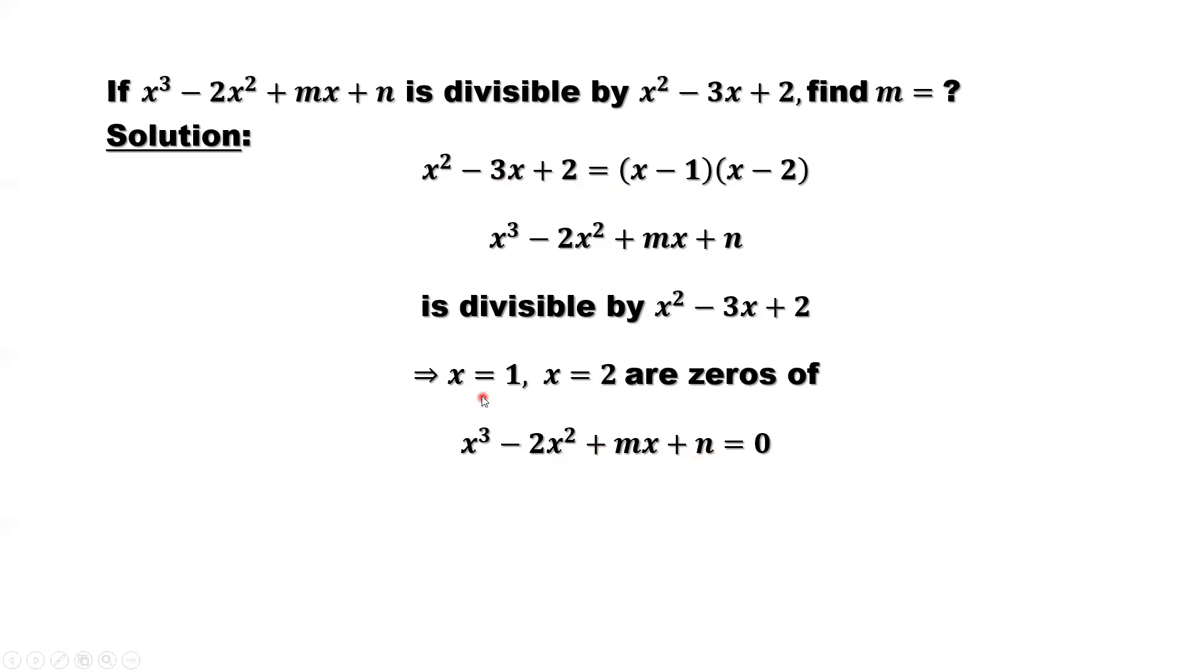That means x equals 1, x equals 2 are solutions for this equation. The zeros means if we replace x by 1 or by 2, the left hand side should be 0. Let's replace x by 1 first. 1 to the power 3 minus 2 times 1 squared plus m times 1 plus n equal to 0. Simplify this, we have m plus n equals 1.